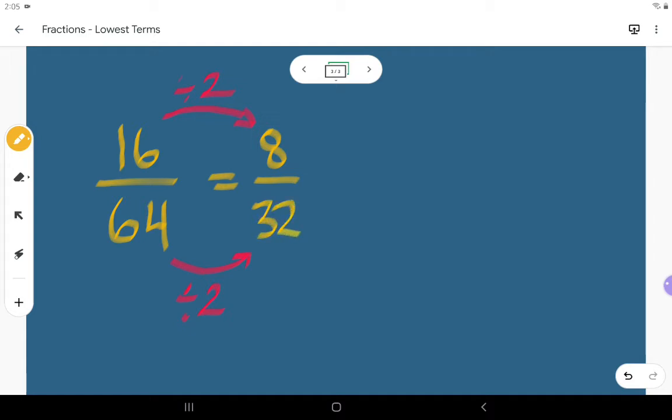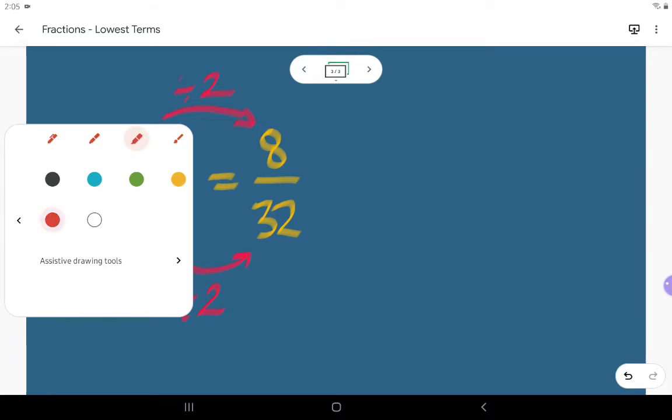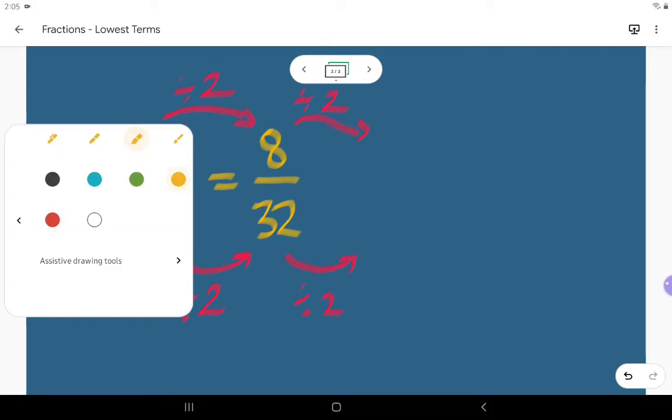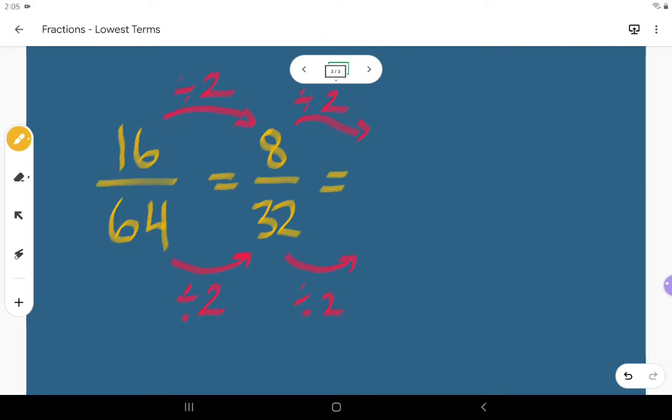If we look at 8 and 32, you might say, 'Wait a minute, those are still both even numbers. I can still divide the numerator and the denominator by 2.' Well, if that happens, simply do it again. You're allowed to keep putting something into lowest terms until you don't have anything that both can be divided by.